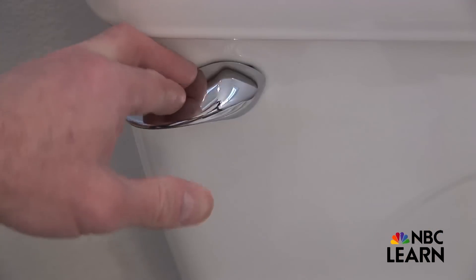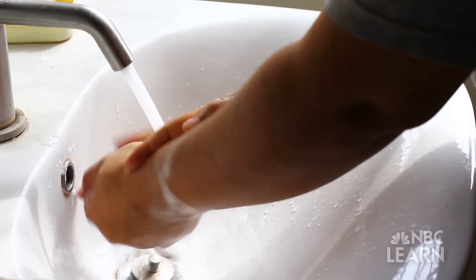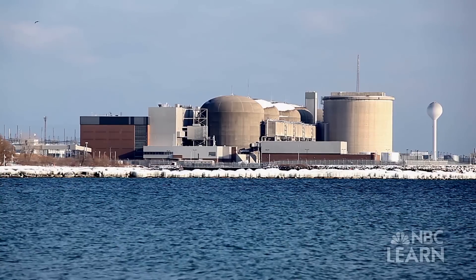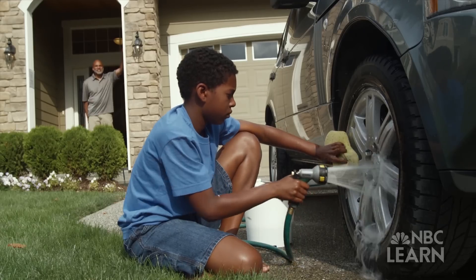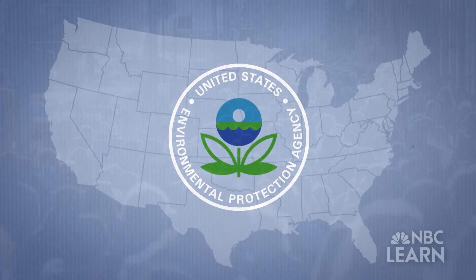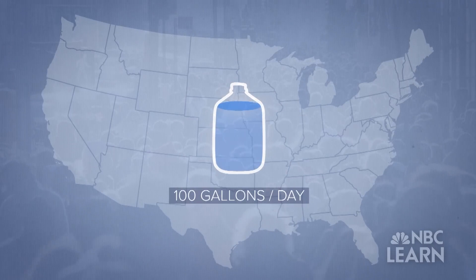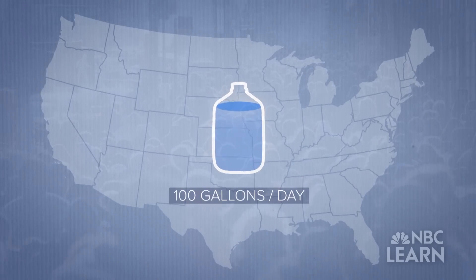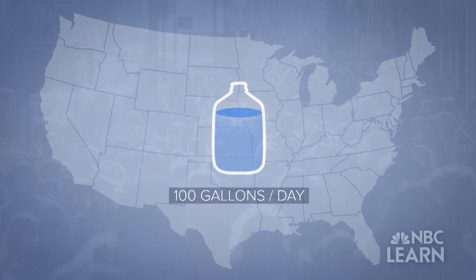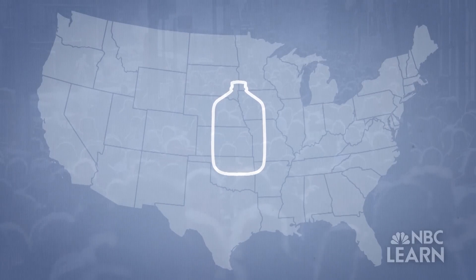Wastewater — it's what gets flushed down the toilet, rinsed down the drain, and produced by places such as factories, workplaces, and homes. According to the US Environmental Protection Agency, the average person uses about 100 gallons of water a day, with almost all of it turning into some form of wastewater.